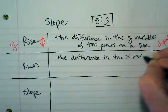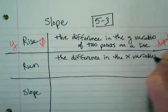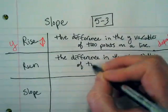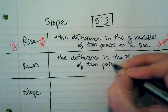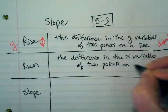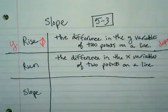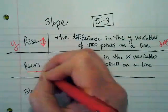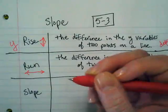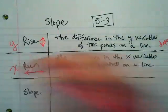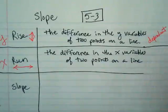The difference in the x variables of any two points. This one's independent because this one goes across back and forth. That means it's related to the x, and x is always our independent.